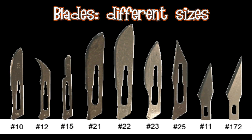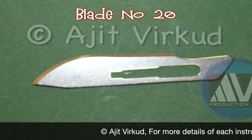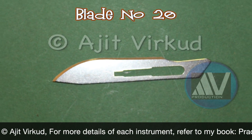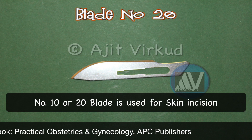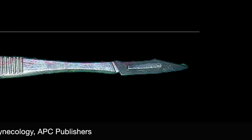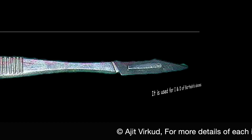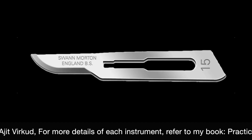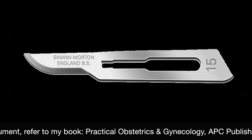Surgical blades come in different sizes and shapes. Number 20 blade has a larger, broader cutting edge and a flat back; it is used for making skin incisions along with number 10. Number 11 blade has a triangular sharp edge with a pointed tip, used for incision and drainage of Bartholin's abscess. Number 15 blade is a smaller version of number 10, used for fine incisions like trans-obturator tape or trans-vaginal tape operations.